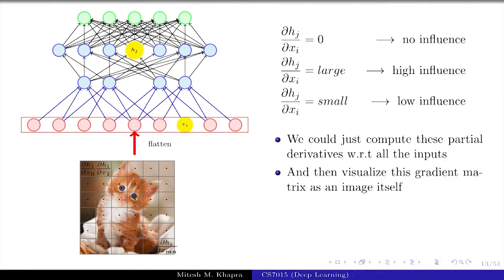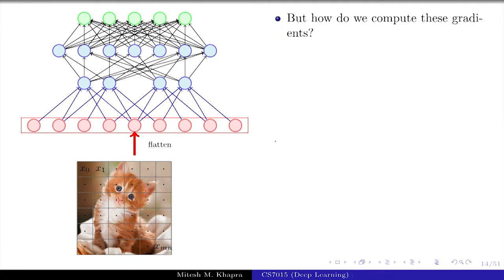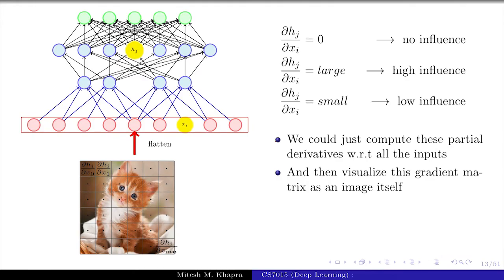So, we could just compute these partial derivatives and visualize this gradient itself as an image. So what do I mean by that is, I am going to compute ∂h_i/∂x_0, ∂h_i/∂x_1, all the way up to ∂h_i/∂x_mn. So I am going to compute these m cross n entities and I can just visualize this as an image.